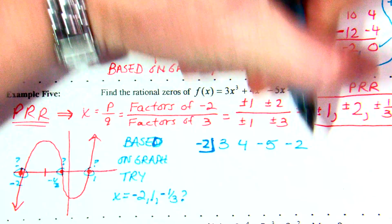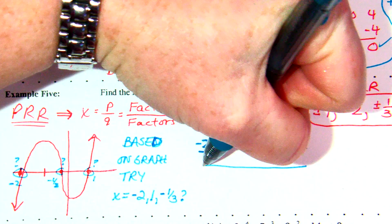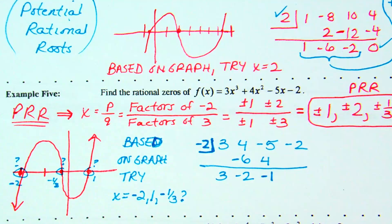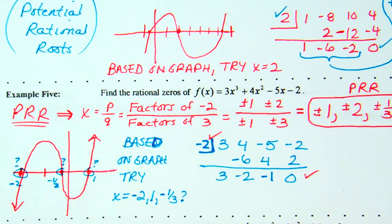Also note: just like long division, if you have a missing place value in synthetic division, you have to throw in a 0. Now, to check x equals 1 next — I'm not going to go back and use my same original row of numbers. This is important. I'm going to use the new row of numbers: 3, negative 2, negative 1, which represents 3x squared minus 2x minus 1. We're factoring as we go. Drop down the 3. 1 times 3 is 3. Negative 2 plus 3 is 1. 1 times 1 is 1. Negative 1 plus 1 is 0.